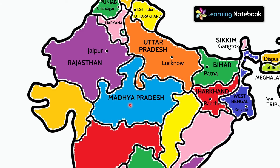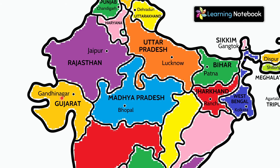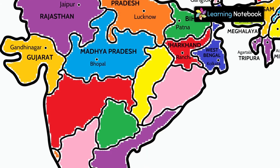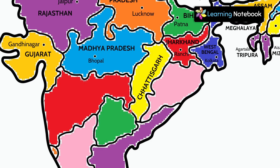Now this Indian state is Madhya Pradesh and its capital is Bhopal. This is Gujarat and its capital is Gandhinagar. Now here we have Chhattisgarh and its capital is Raipur.